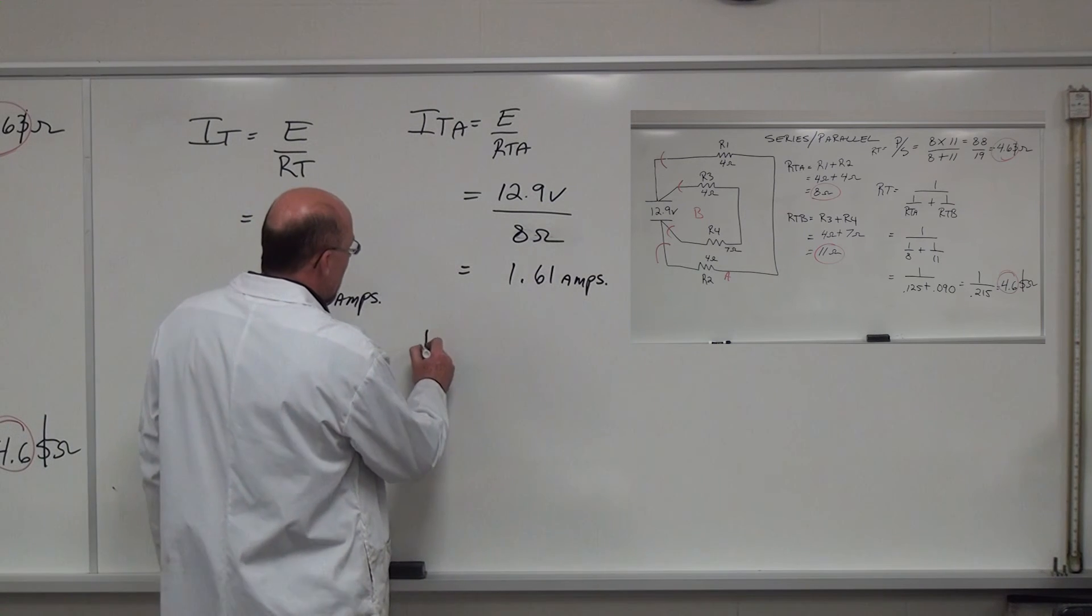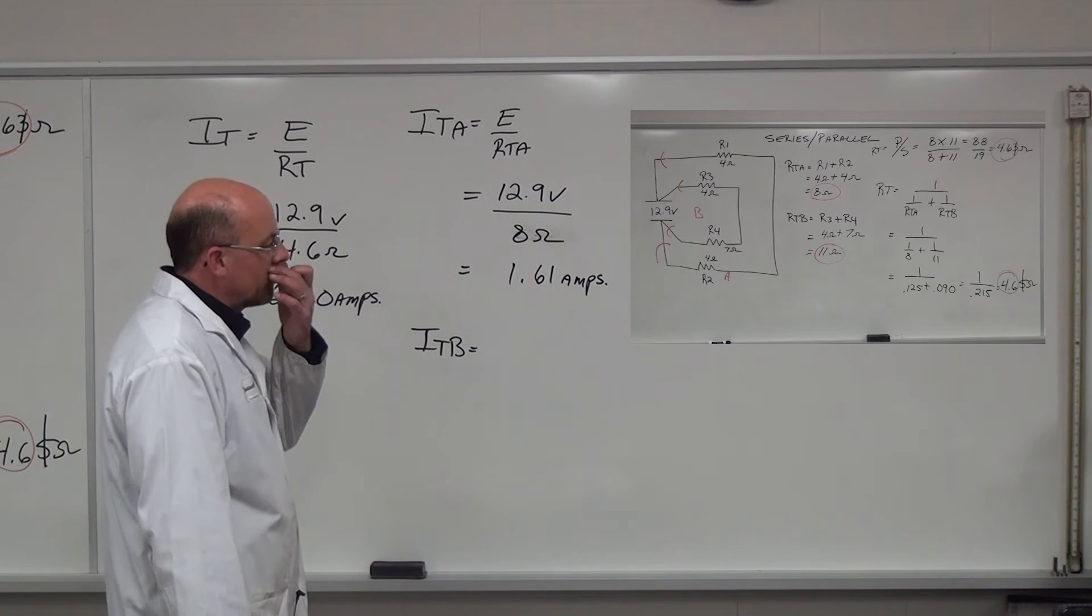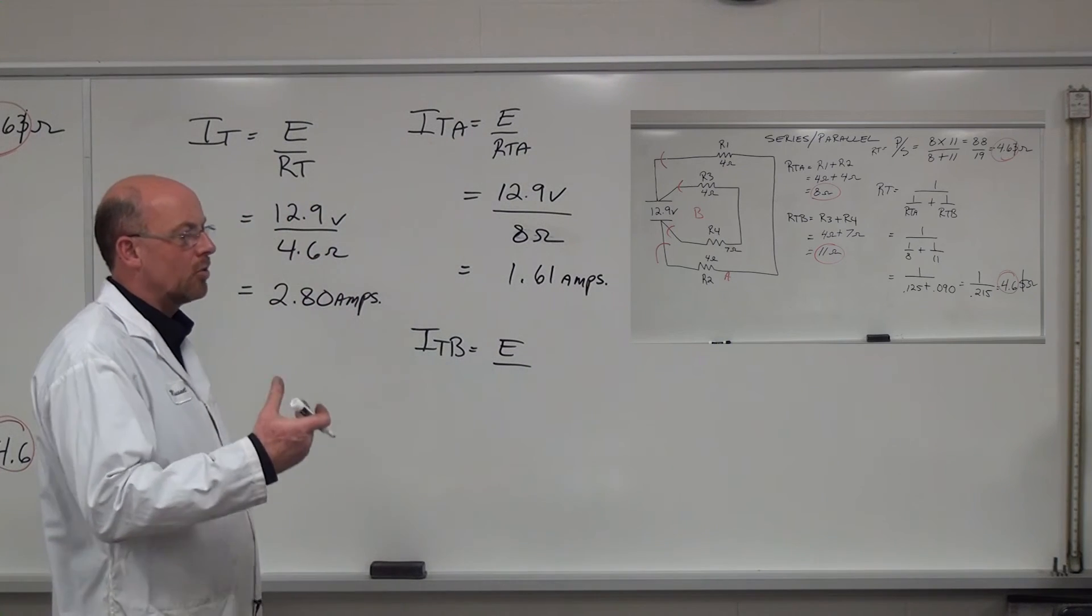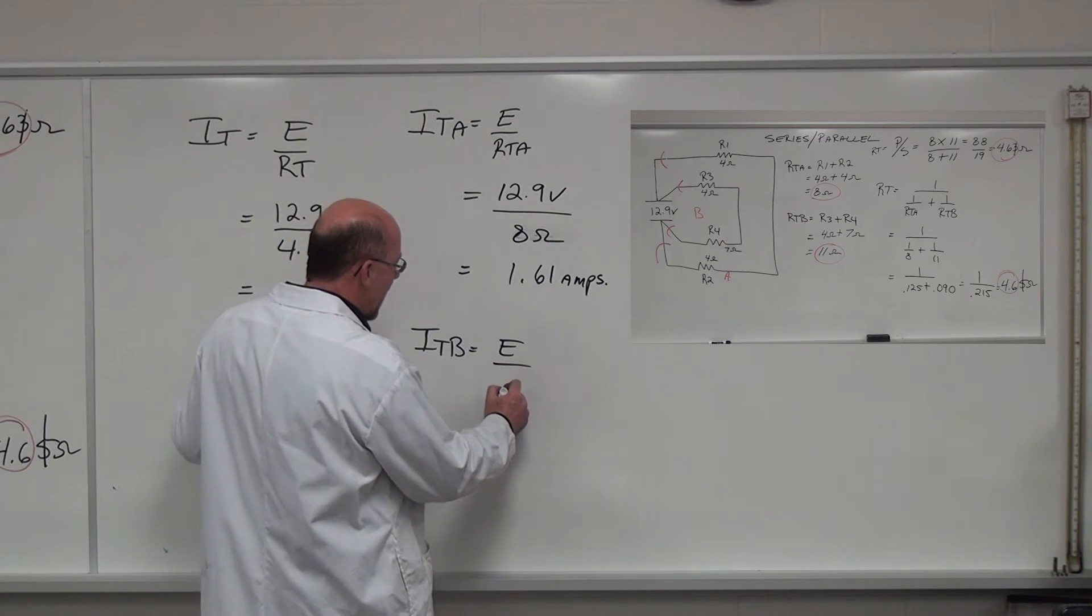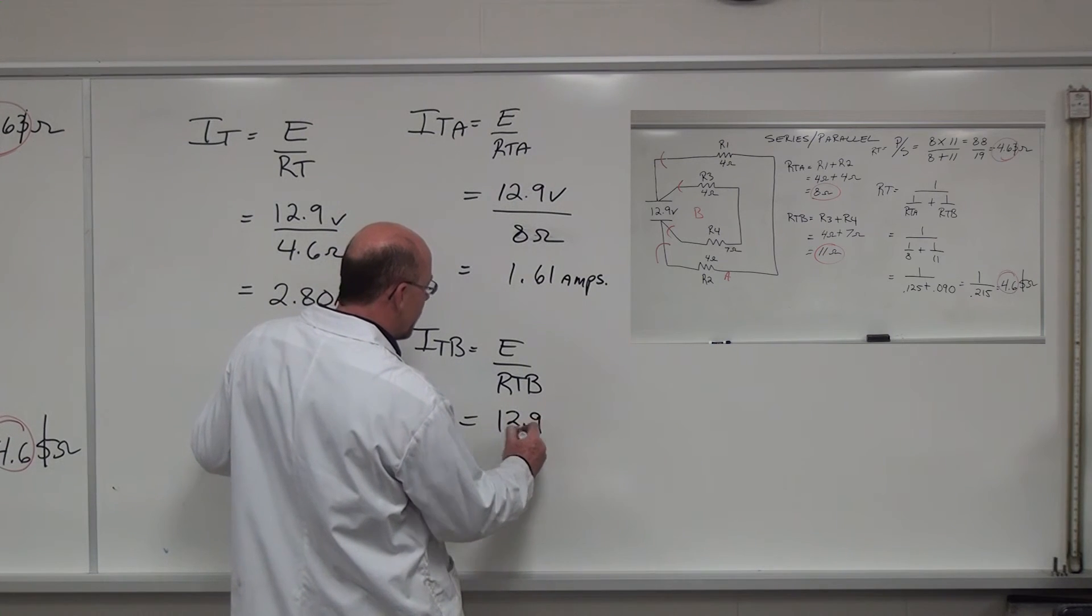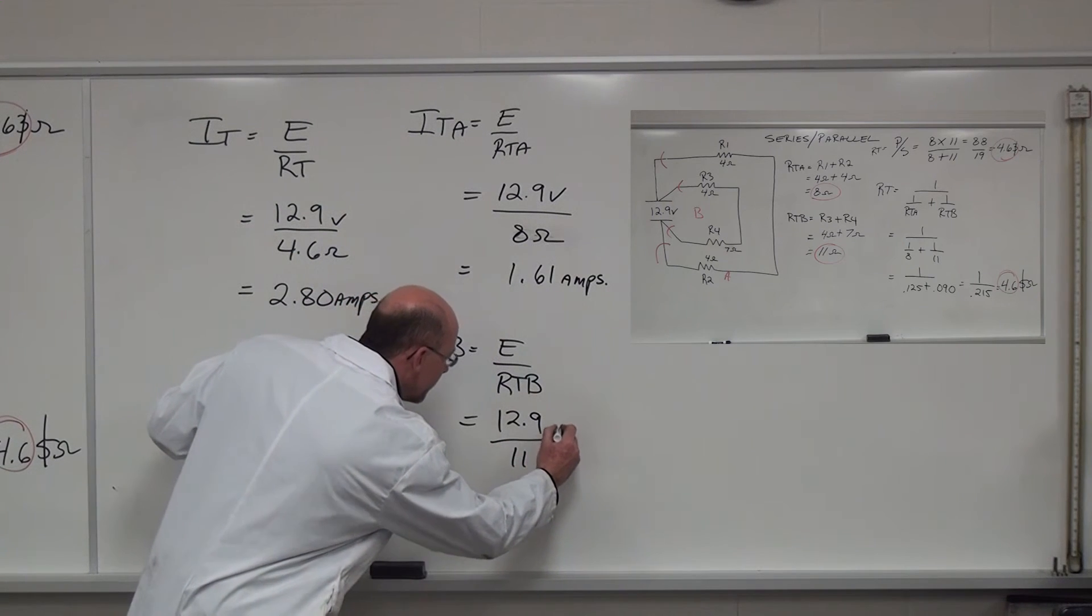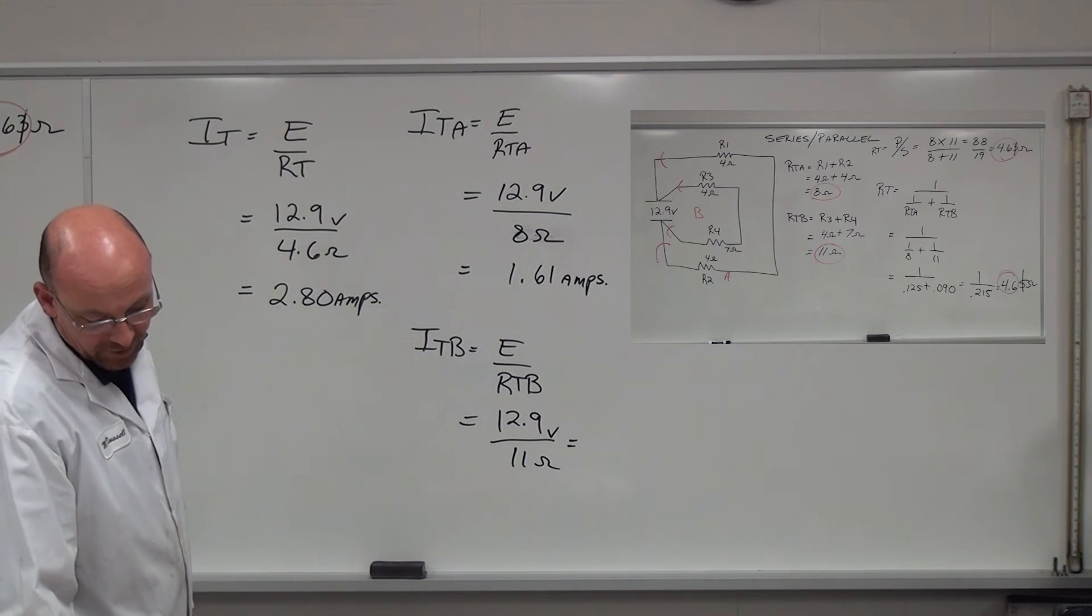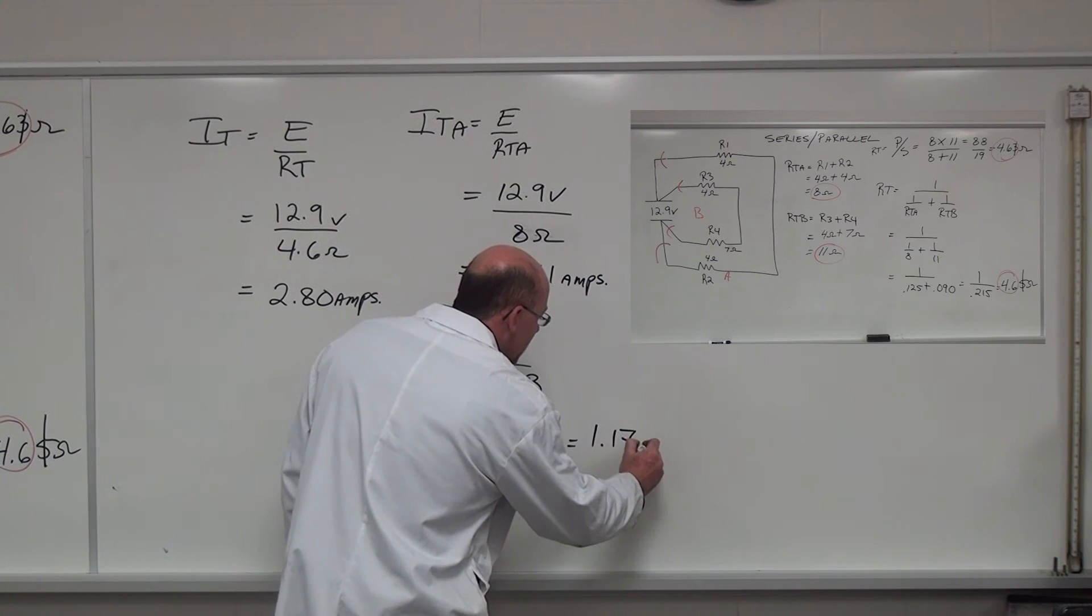Then we take a look at ITB. And to look at how much current is flowing in B path, we take the voltage in B path, and in a parallel circuit it's always going to equal source voltage in each branch, and then we divide that by the resistance total of B. So we've got 12.9 volts. Resistance total of B path is 11 ohms. And if we divide 12.9 by 11 ohms it gives us 1.17 amps.